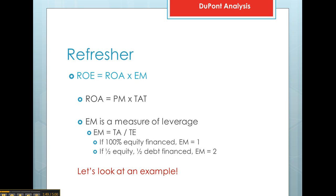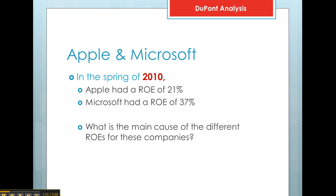Let's take a look at an example. In the spring of 2010, Apple had a return on equity of 21%. Microsoft had a return on equity of 37%. What is the main cause or driver of the different return on equities for these companies? Your case is going to ask you to identify the main driver of return on equity for the three companies in the case.